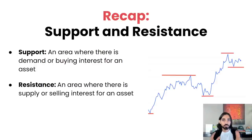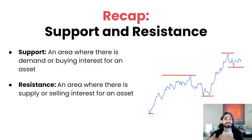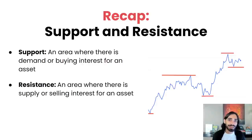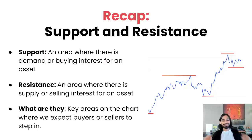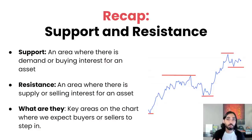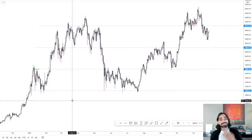Next we have resistance, which is the opposite — this is where there is supply or selling interest, where people are looking to offload their bags. So when price hits this level, it tends to get pushed back down. In general, these are key areas on the chart where we expect a lot of buying and selling to happen — key levels where we expect buying or selling to occur.